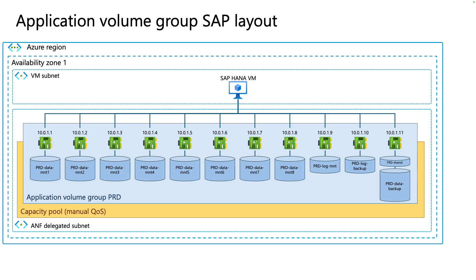Application Volume Group for SAP HANA can deploy up to eight data volumes, depending on the size of the HANA landscape, and log and log backup volumes, as well as shared and data backup volumes.